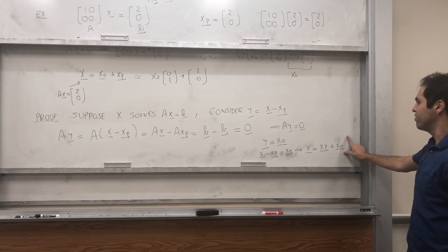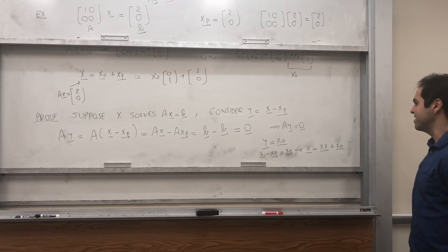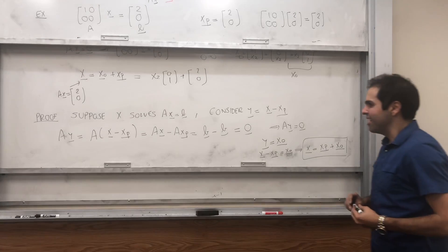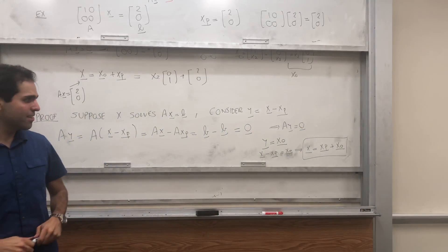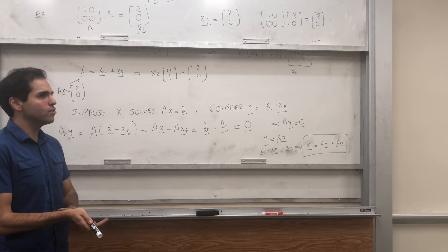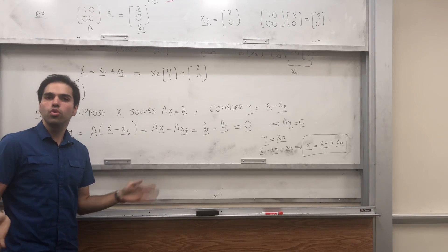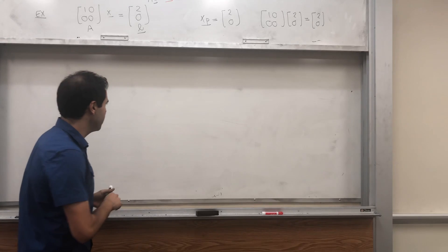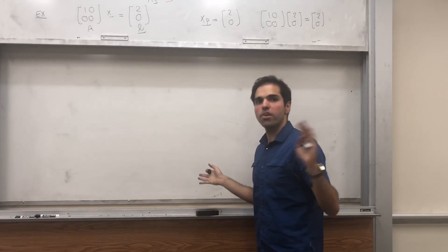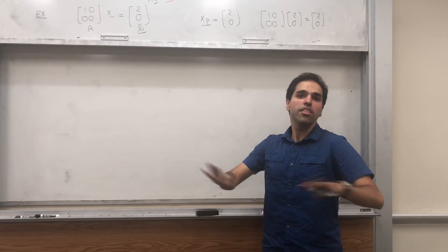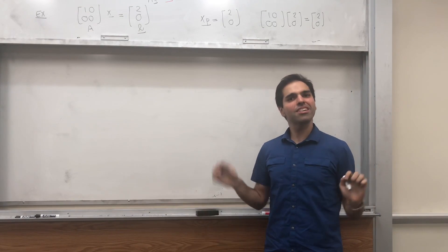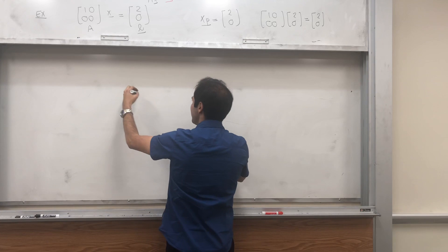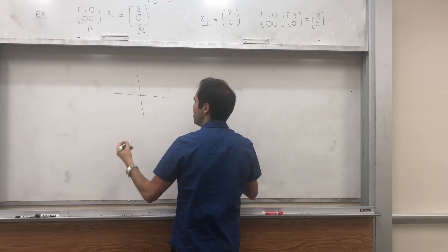Conversely, if x is of this form, then it also satisfies Ax equals b, so those two things are equal. This proof also tells us what solutions of Ax equals b look like, because there are really just two cases. Either a particular solution doesn't exist, in which case there are no solutions, or a particular solution does exist and we ask what all solutions look like.